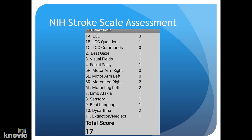For level 1A, it's level of consciousness. If the patient's alert, they'll receive zero points. If they arouse to minor stimulation, they'll receive one point. The points increase with increasing neurological deficits, so a patient that has a higher score on an NIH stroke scale means they have more neuro deficits.